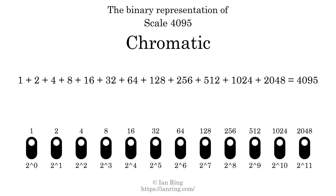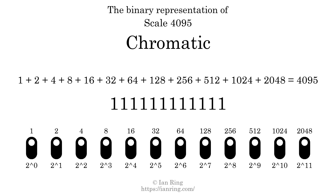The scale number not only enumerates the scale with a unique index, but it also literally describes the tonal content of the scale. Represented as a binary number in base 2, the scale number is 1, 1, 1, 1, 1, 1, 1, 1, 1, 1, 1, 1.